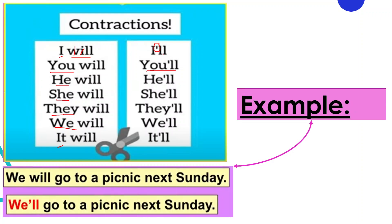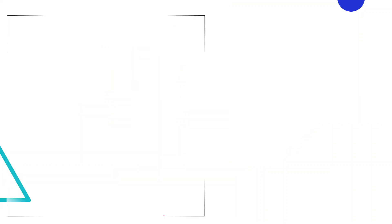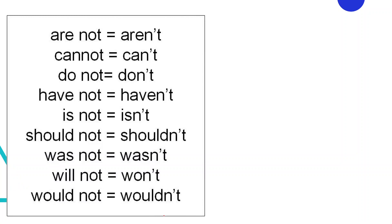Let me show you one example: 'We will go to a picnic next Sunday' becomes 'We'll go to a picnic next Sunday.' That is how you shorten it using the contracted form with 'will.'